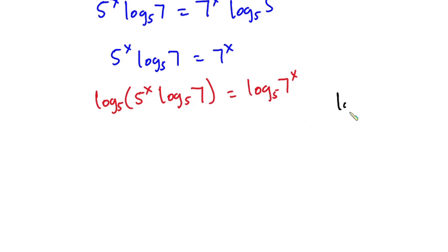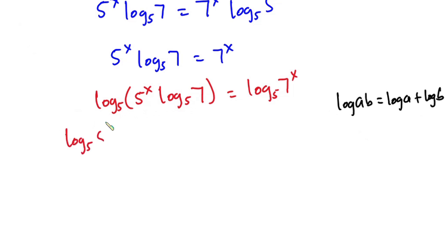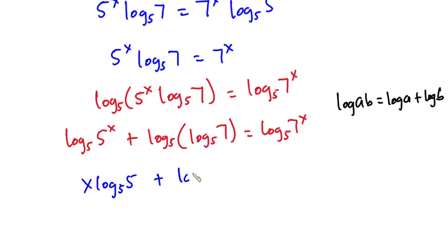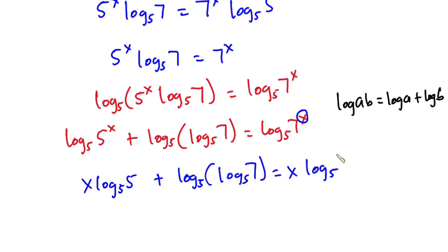Now, recall that log(a times b) equals log a plus log b. Applying that here, the left side becomes log base 5 of 5 to the power x plus log base 5 of log base 5 of 7. Moving x to the front gives us x times log base 5 of 5 plus log base 5 of log base 5 of 7. On the right hand side, moving x to the front gives x times log base 5 of 7.